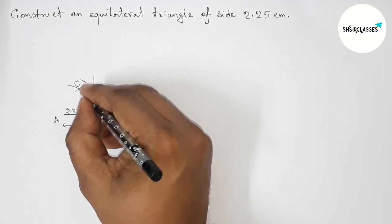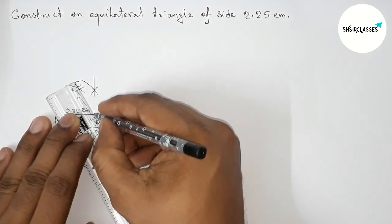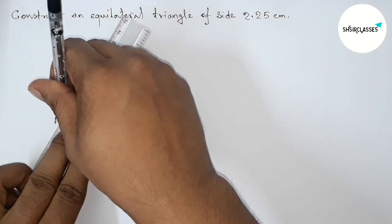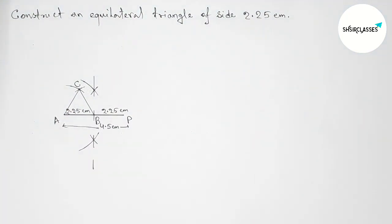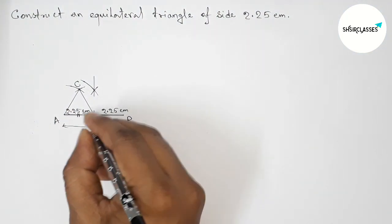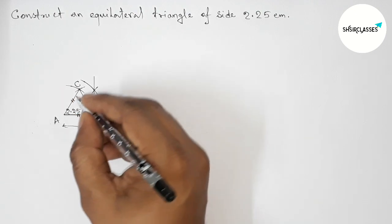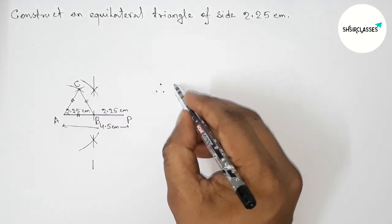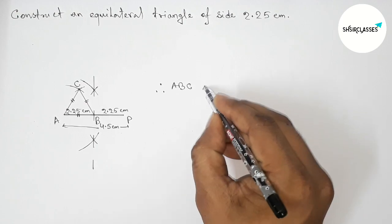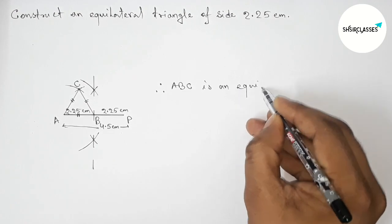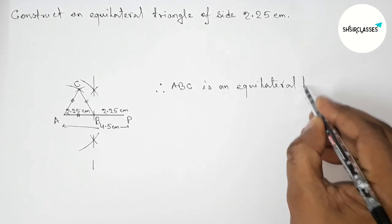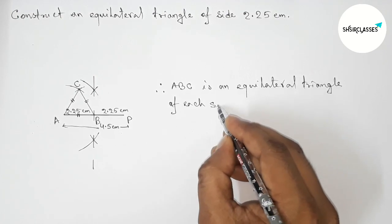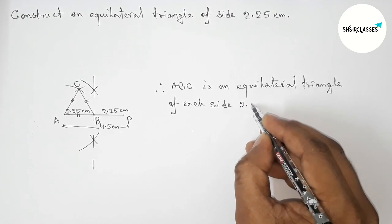So first joining BC, then joining A and C to get the equilateral triangle. So here all the sides of this equilateral triangle are equal. So therefore triangle ABC, triangle ABC is an equilateral triangle of each side 2.25 centimeter. So by this way you can construct this equilateral triangle.